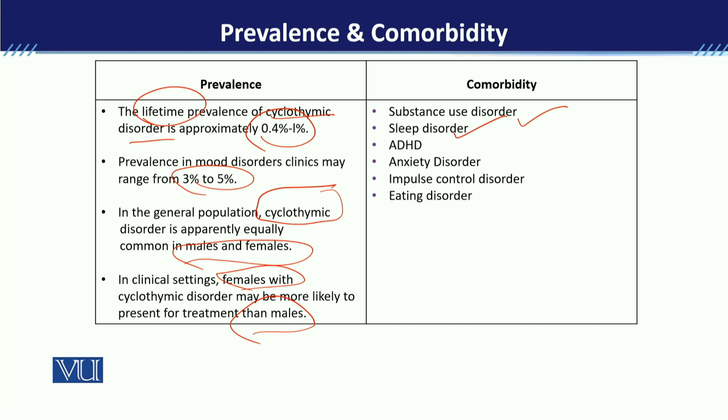ADHD can also be a comorbid condition, because in ADHD the child is very impulsive and restlessness is present. We need to assess whether mood disorder risk is present and treat accordingly. Anxiety disorders can also occur because social skills may be limited, which can lead to social anxiety, generalized anxiety disorder, or social phobia.